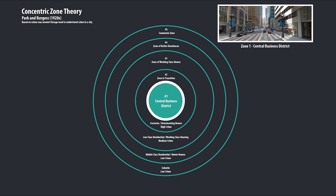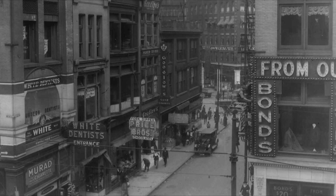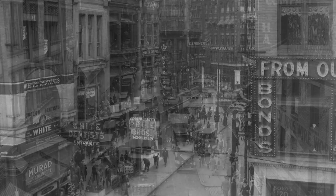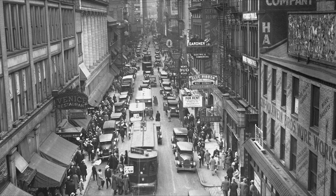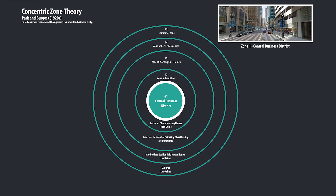Zone one, or the middle of the concentric circle, is the central business district — the downtown of a 1925 city. There are skyscrapers, high rises, and tenement buildings. There's varying violent crime, and there's also white collar crime. This is where the business folk come to do their business.